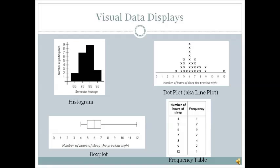In the upper right, we have the dot plot, a.k.a. the line plot. Here, x's are used to represent a number of subjects. Here it's just one subject for each x. But we could have that representing two or more subjects based on the key.